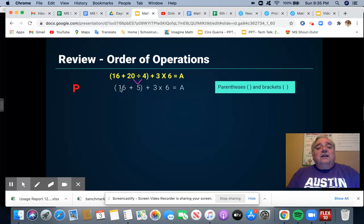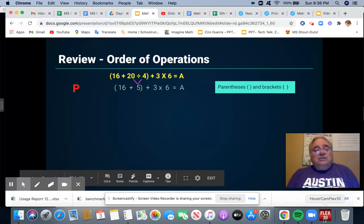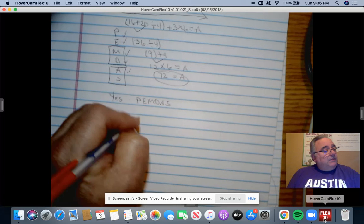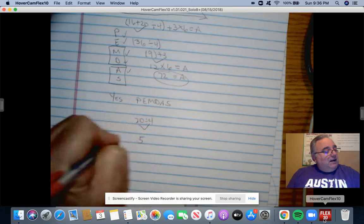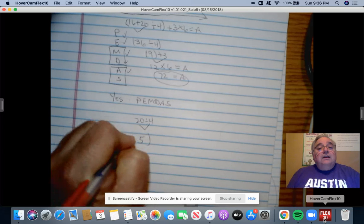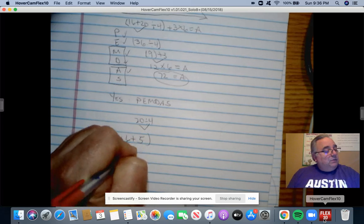We're going to be working whatever's within the parentheses or brackets first. But we also have to follow PEMDAS. The biggest operation that we see there is multiplication and division. We see division. So we have to do the division first. So let me go back to that. We have 20 divided by 4. That gives me 5. 16 plus 5 gives me 21.